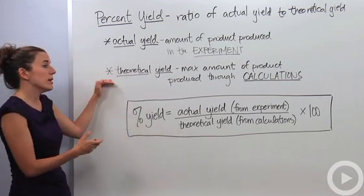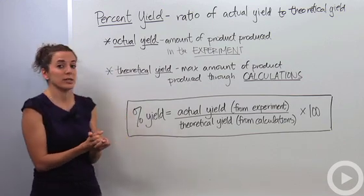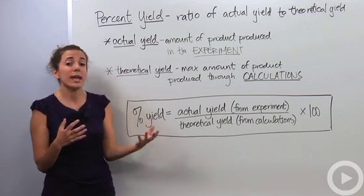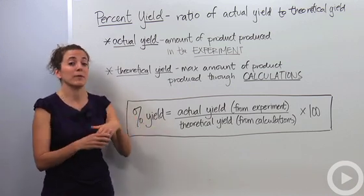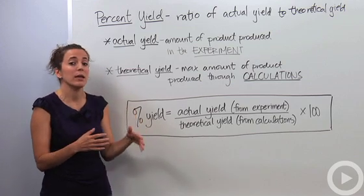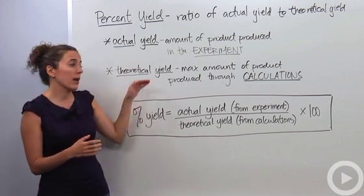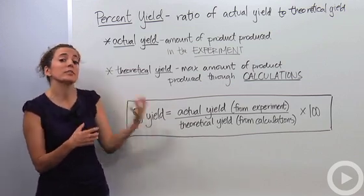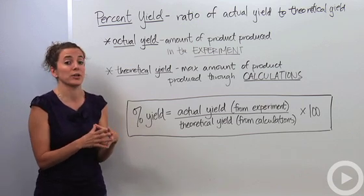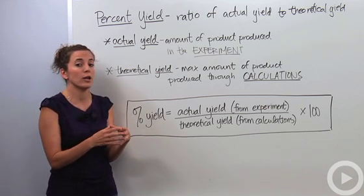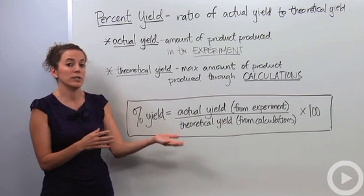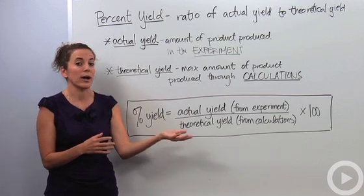The theoretical yield is the maximum amount produced through calculations. You're going to make mistakes — you're going to have product fall, contamination, whatever it may be. So in theory you'll get something different, based on your stoichiometric calculations. It's a comparison of what you actually get in the lab versus what you should get using stoichiometric calculations.